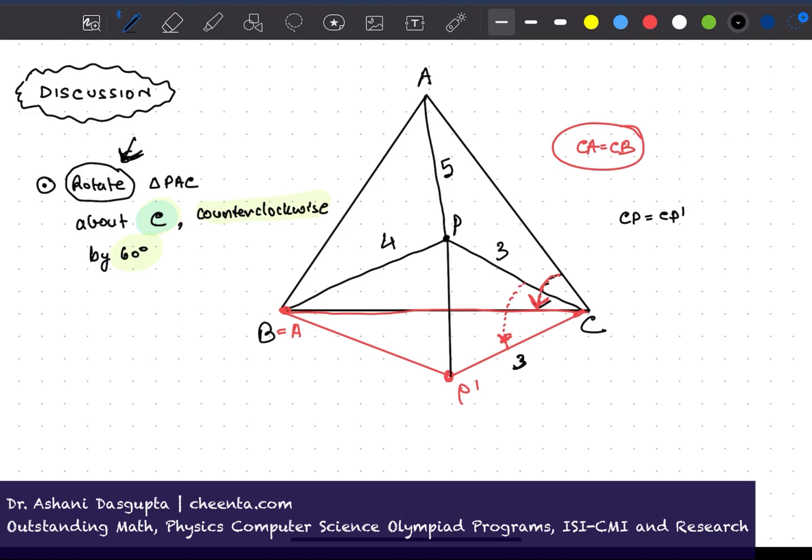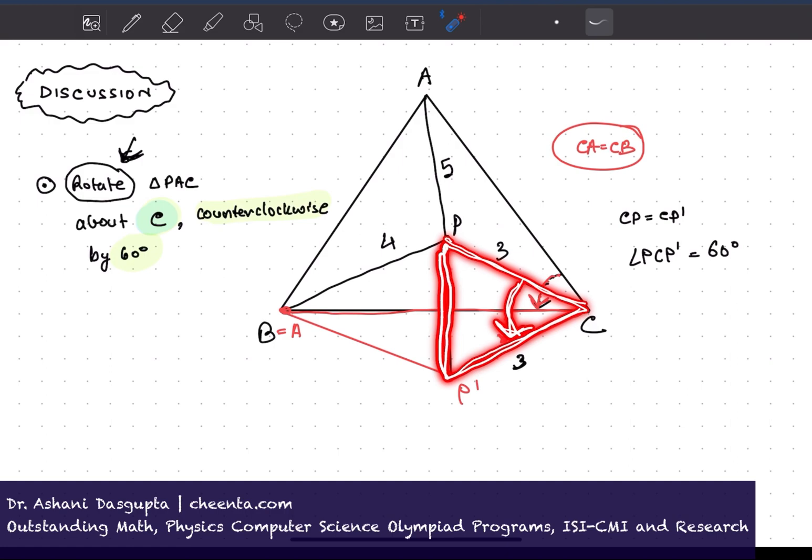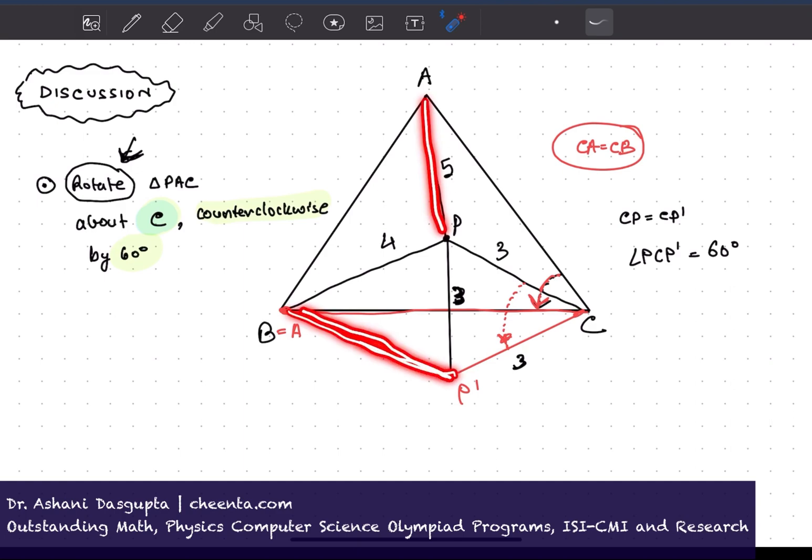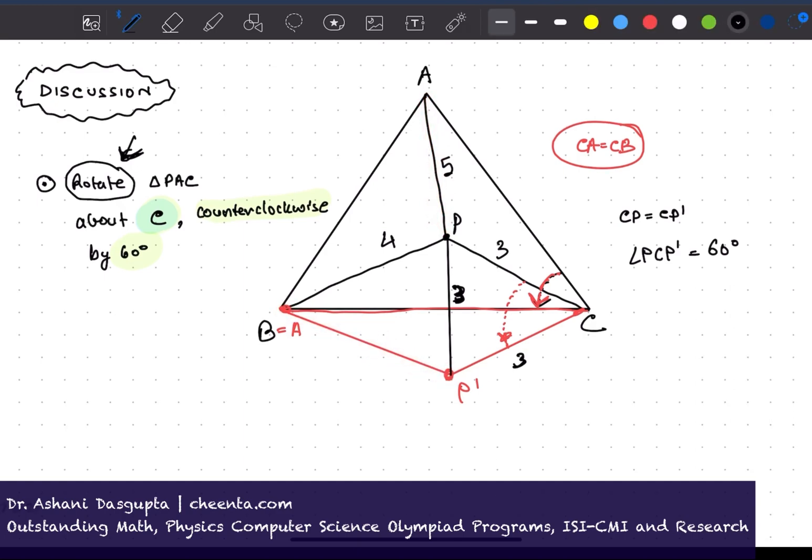If I join PP prime, let's do that. So we notice that this angle is 60 degrees because the angle of rotation is 60 degrees. So what is this triangle? This is an isosceles triangle with an angle 60 degrees. An isosceles triangle with an angle 60 degrees, which means it's an equilateral triangle. So therefore, this length is 3 as well. And this length is 5 because PA has come to P prime A. That's the rotation. So this is 5.